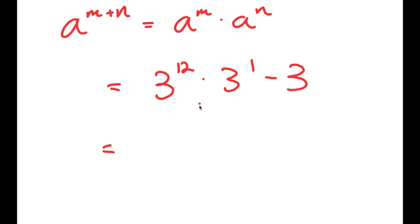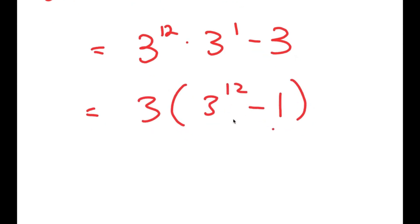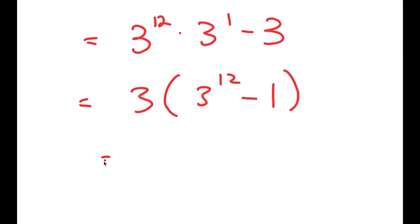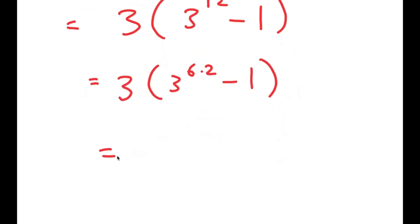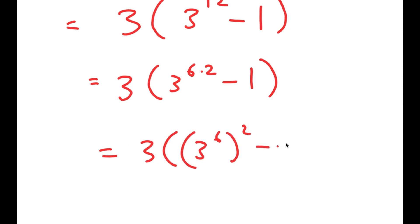And from here I can factor out 3, so I get 3 times 3 to the power of 12 minus 1. Now 3 to the power of 12 I'm going to rewrite as 3 to the power of 6 times 2, and that's equal to 3 times 3 to the power of 6 to the power of 2 minus 1 squared.